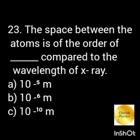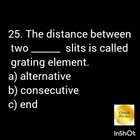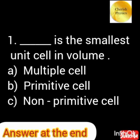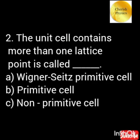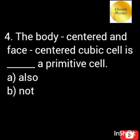The space between the atoms is of the order of Ångström compared to the wavelength of X-ray. Lattice plane is also called a Cleavage plane. The distance between two adjacent slits is called the grating element. The primitive cell is the smallest unit cell in volume. The unit cell that contains more than one lattice point is called a non-primitive cell. A unit cell of smallest volume containing exactly one lattice point is called a primitive cell.